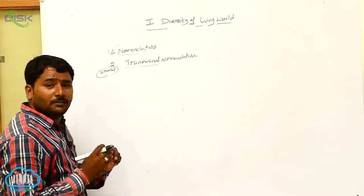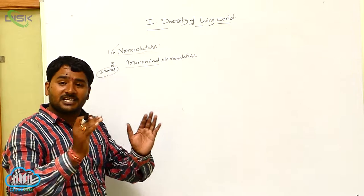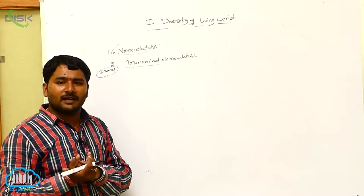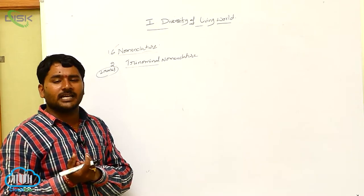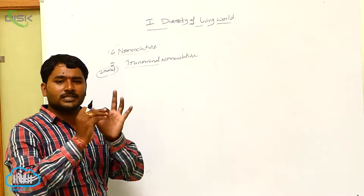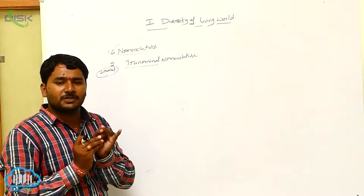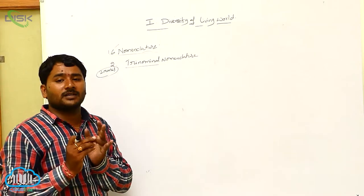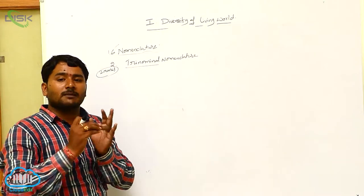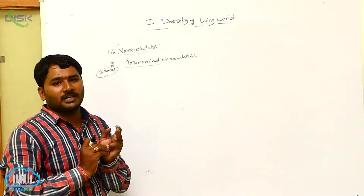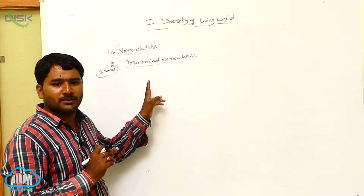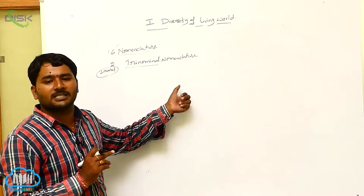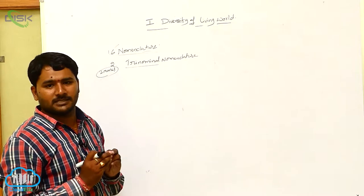To summarize, trinomial nomenclature is nothing but an extension of binomial nomenclature. The scientific name has three words: the first is the genus, the second is the species, and the third is the subspecies. Importantly, the subspecies also starts with a small letter. Examples seen: Homo sapiens sapiens and Corvus splendens splendens.